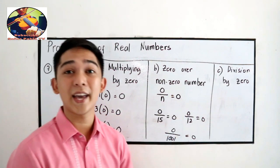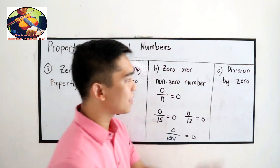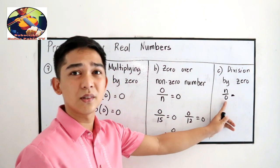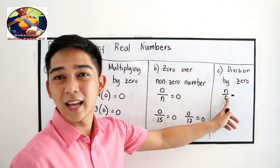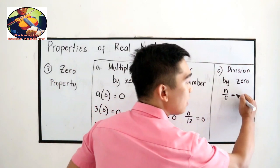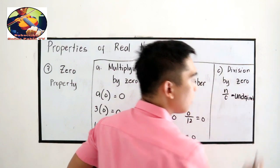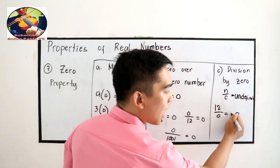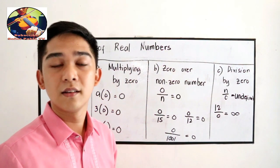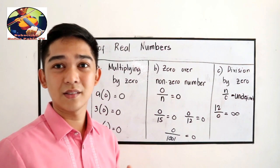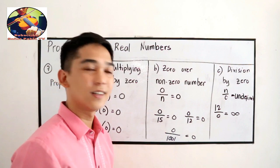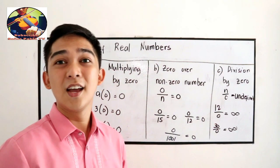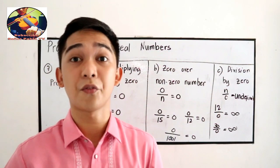Part C: division by 0 — dividing any number by 0, written as n over 0, is not allowed in mathematics. We call this undefined. If you try it on a calculator, 12 over 0 or 30 over 0 will show infinity or undefined — meaning math error or syntax error. So those are all the properties of real numbers, 1 through 7.